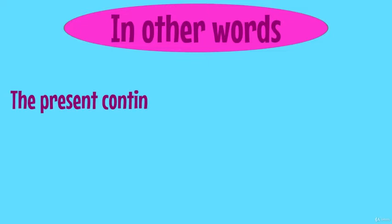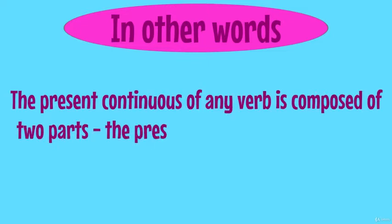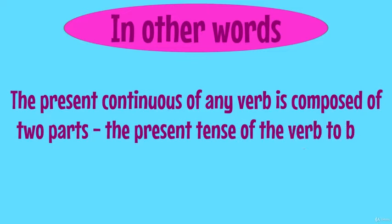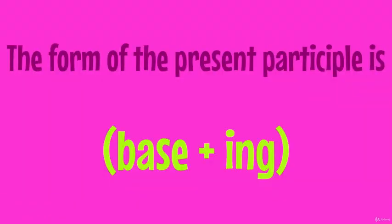In other words, the present continuous of any verb is composed of two parts. The present tense of the verb to be plus the present participle of the main verb. The form of the present participle is base plus ing.